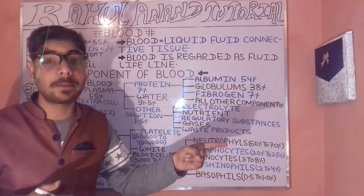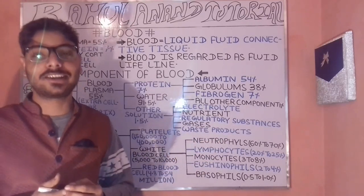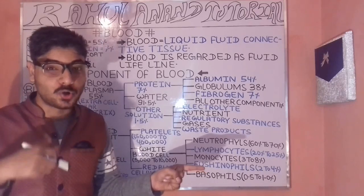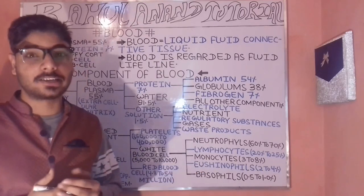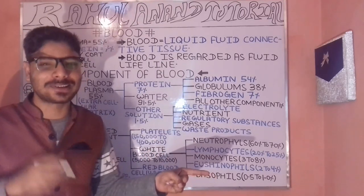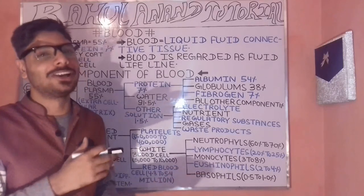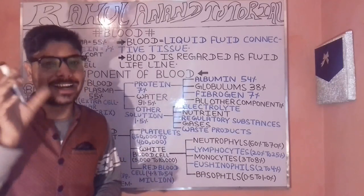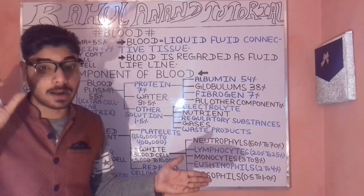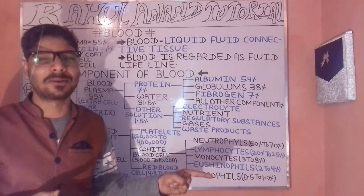Globular proteins are soluble in water or digestive juices. Examples include pepsin, renin, and lipase. Renin is responsible for coagulation of milk; lipase for breaking down fat molecules; and for digestion of carbohydrates (CHO), i.e., sugars.